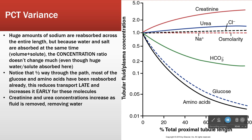That's different from glucose: as we go from the beginning to the end we see the glucose concentration — the ratio between filtrate and plasma — dropping. That's reabsorption. Amino acids dropping, bicarbonate dropping, creatinine increasing — because we're taking water away and concentrating the urine while removing the things we want to keep.